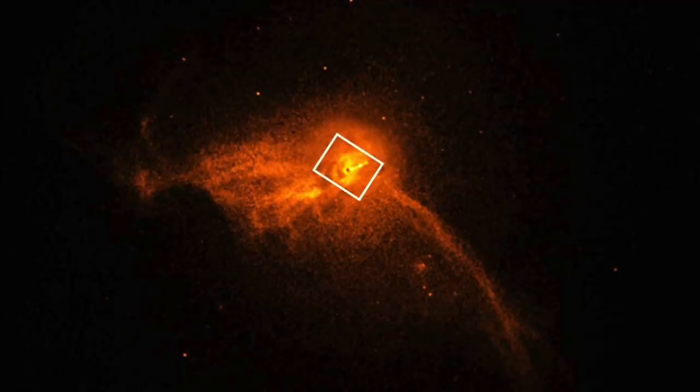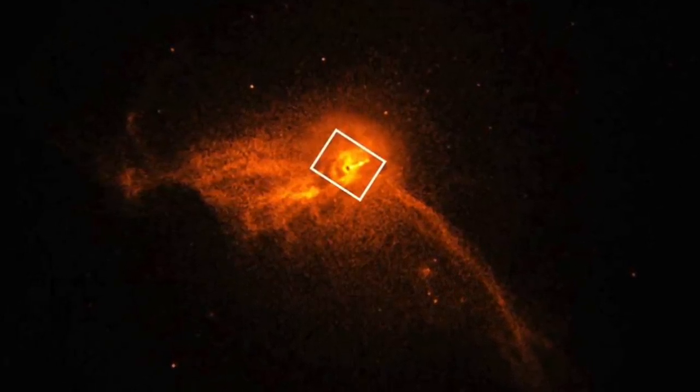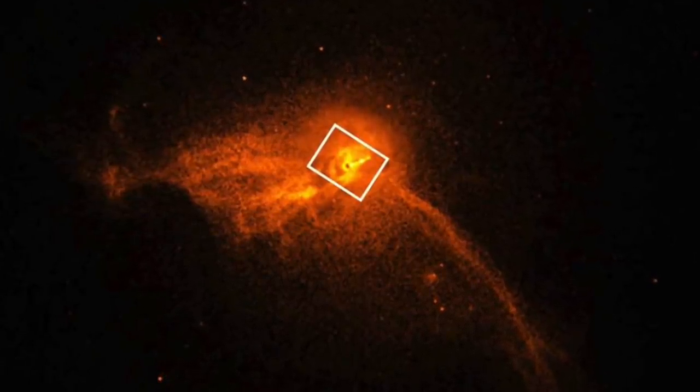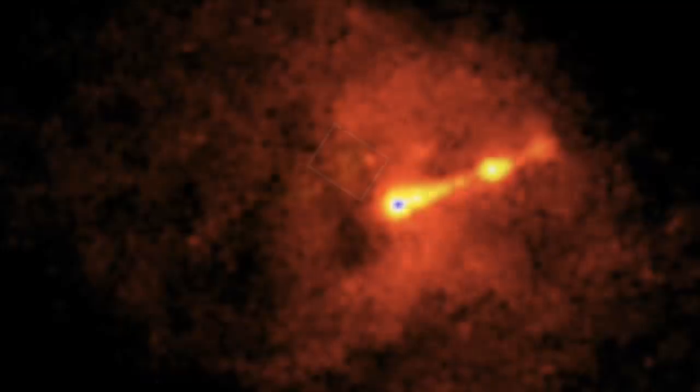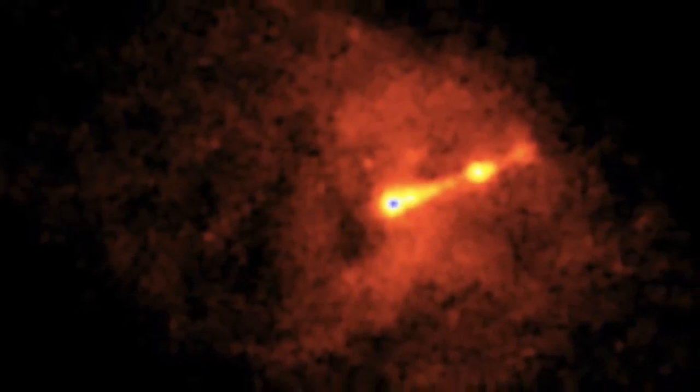The Event Horizon Telescope Collaboration were the first to release images of a huge black hole. And they provided the theory that this huge black hole grew to its size by merging with other black holes. They identified it as a black object in the center of Messier 87, or M87.